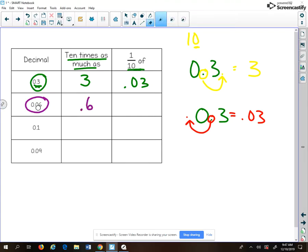One-tenth of that means the number is getting smaller and therefore we're moving the decimal back one place to the left and we're going to get 6 thousandths.